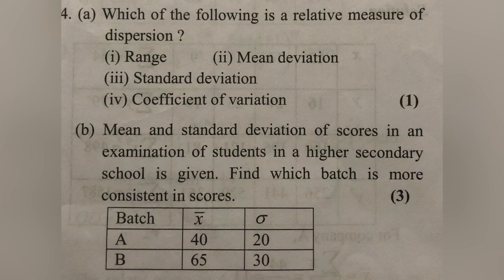The mean and standard deviation of scores in an examination of students in a secondary school are given. Which batch is more consistent in scores? Comparing batch A and batch B, A appears to have a more consistent score. We use the CV formula to determine consistency.